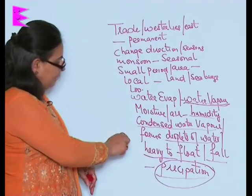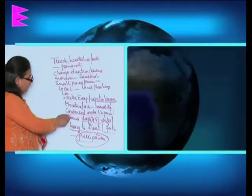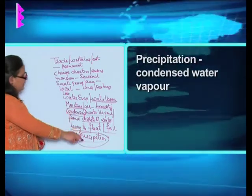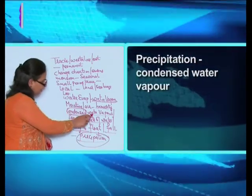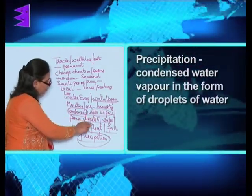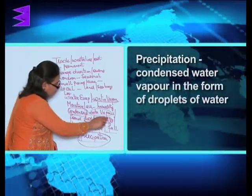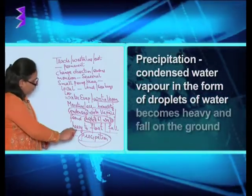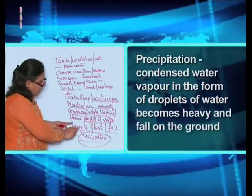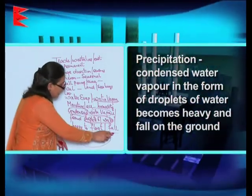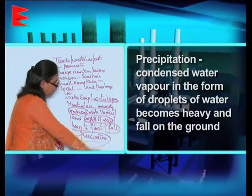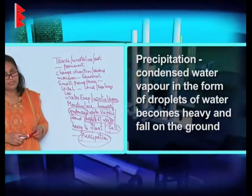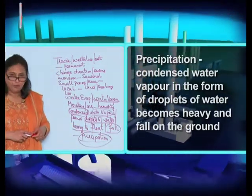So what is precipitation? It is the condensed water vapor in the form of droplets of water that have become heavy and thus fallen to the ground — these are termed as precipitation.